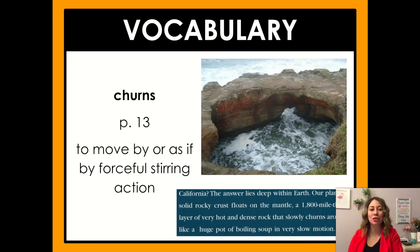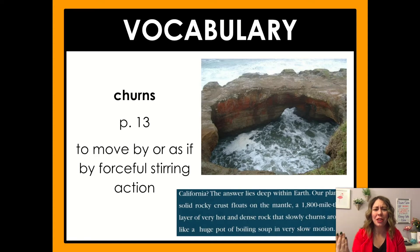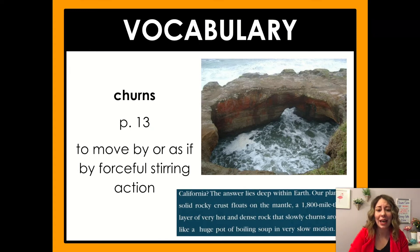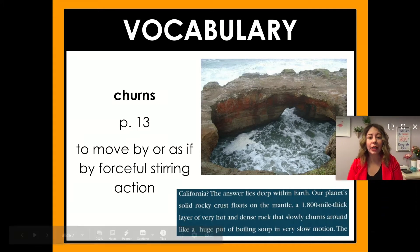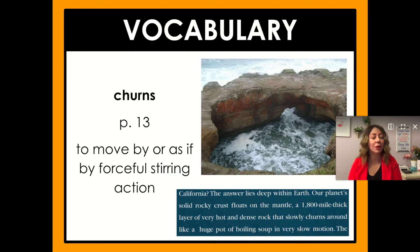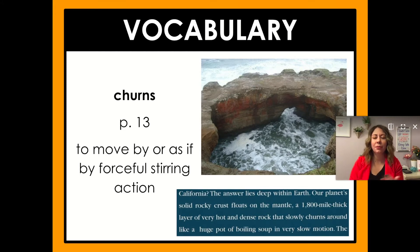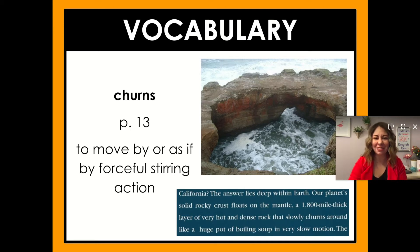Back to our vocabulary — the word 'churns,' which means to move by a forceful stirring action. I always think about churning like water going around and around in a circular area. In our text it says: 'California — the answer lies deep within the earth. Our planet's solid rocky crust floats on the mantle, a 1,800-mile thick layer of very hot and dense rock that slowly churns around like a huge pot of boiling soup in very slow motion.' So we can imagine it slowly stirring around like a pot.